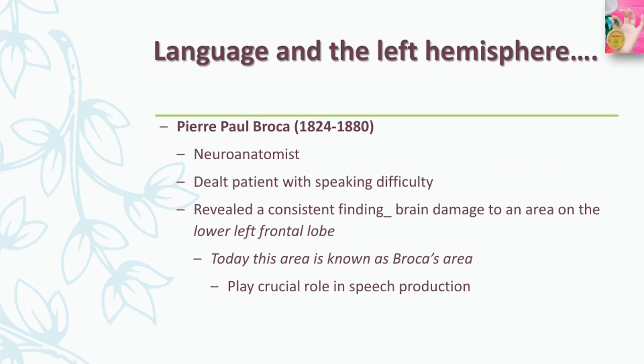In the 1860s, the most conclusive evidence for cortical localization was gathered by French surgeon and neuroanatomist Pierre Paul Broca. Broca treated a series of patients who had great difficulty speaking but could comprehend written or spoken language. Autopsies of these patients revealed consistent brain damage to an area on the lower frontal lobe. Today this area on the left hemisphere is referred to as Broca's area, and it is known to play a crucial role in speech production.